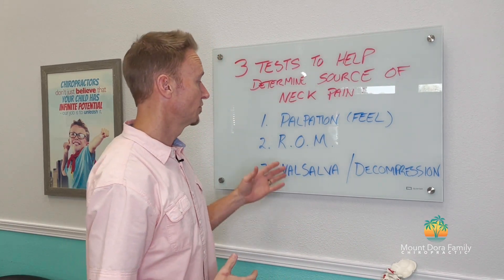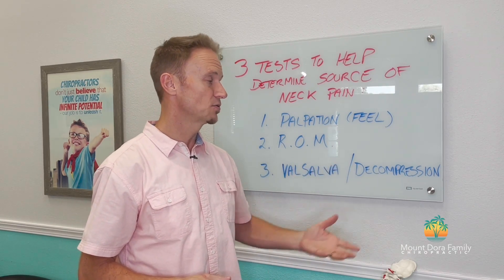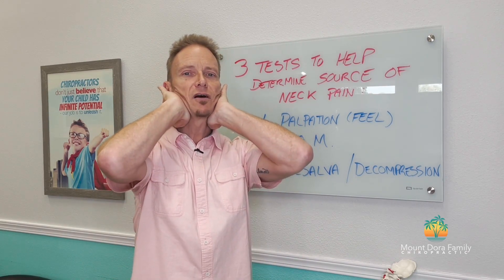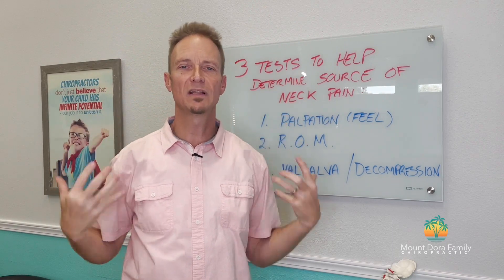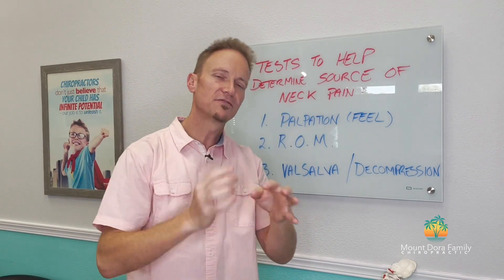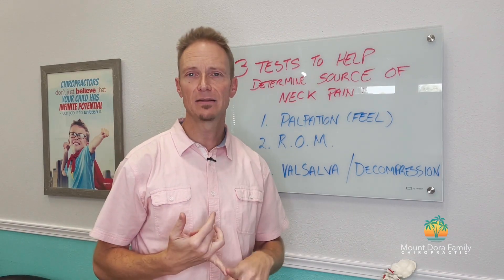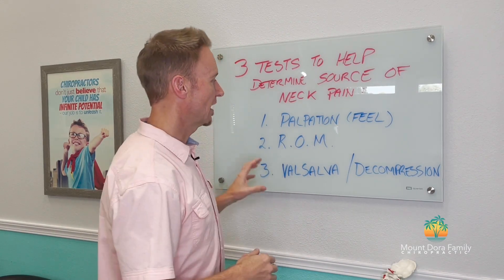If you have a positive Valsalva test, the opposite thing you can do is decompress. You'd simply cup underneath your jaw and the base of your skull, wrap your fingers around, and just gently lift up — taking the weight of your head off your neck. If you feel relief of pain or relief of symptoms coming down into your arms or hands, chances are you've got a deeper issue in your joints or discs irritating the nerve.